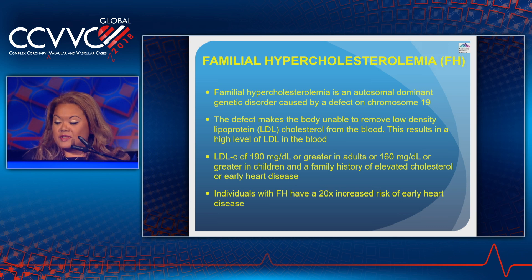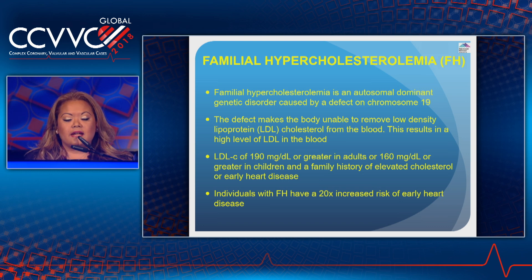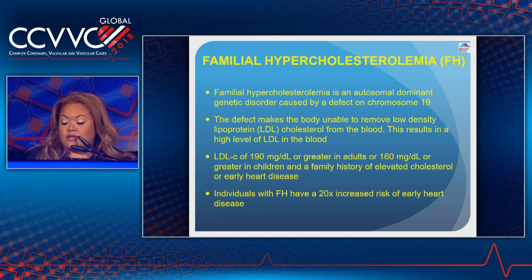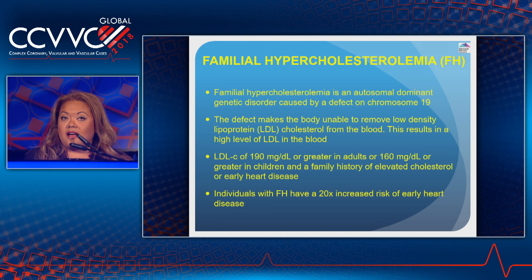Familial hypercholesterolemia is an autosomal dominant genetic disorder caused by a defect on chromosome 19. The defect makes the body unable to remove LDL cholesterol from the body, resulting in high levels of LDL. An LDL-C of 190 mg/dL or greater in adults, or 160 mg/dL or greater in children, combined with a family history of elevated cholesterol or early heart disease. Autosomal dominance means you only need to get the abnormal gene from one parent to inherit the disease. In rare cases, a child may inherit the gene from both parents, causing much more severe elevation in cholesterol, with especially high risk for heart attacks even in childhood.